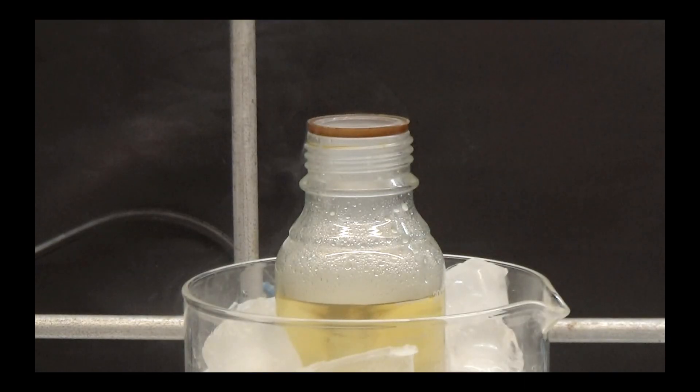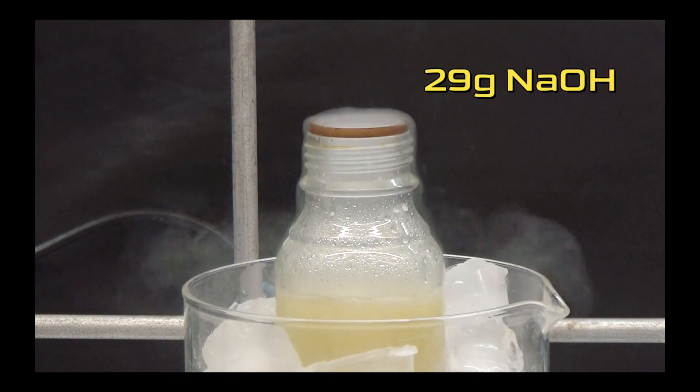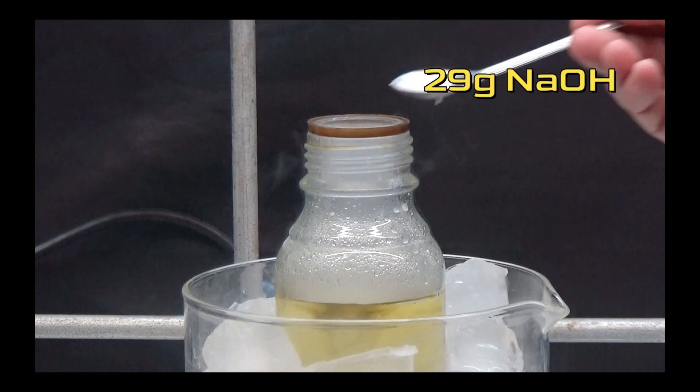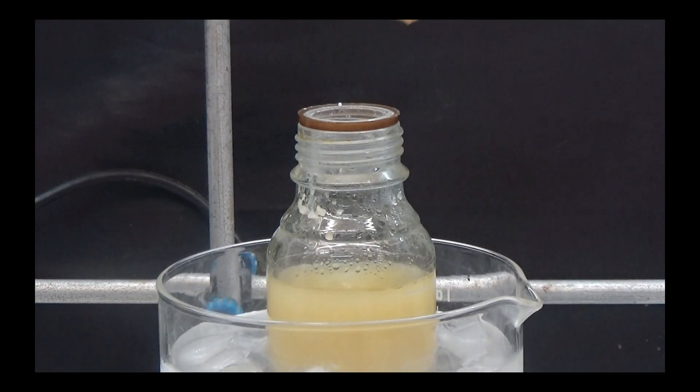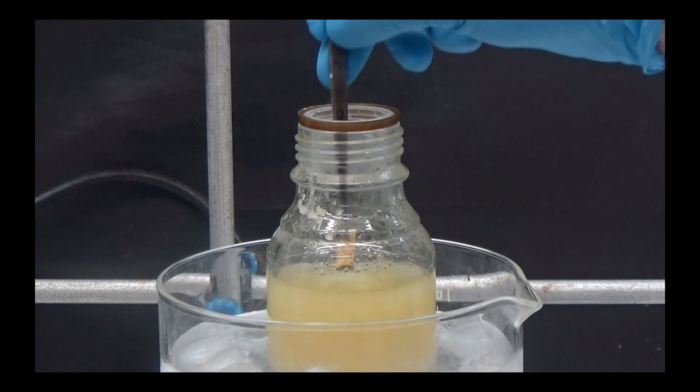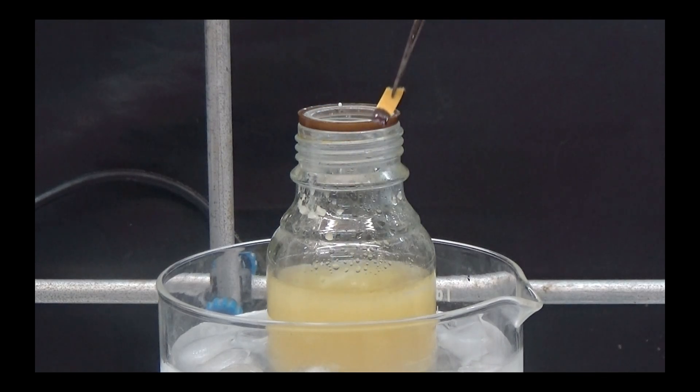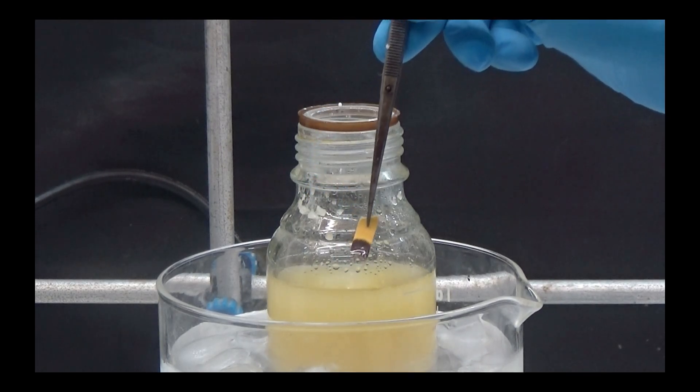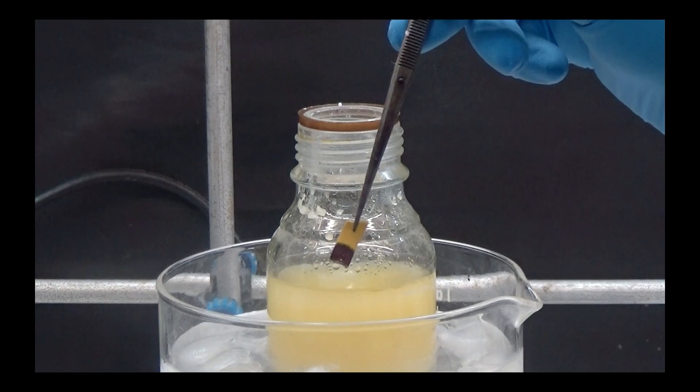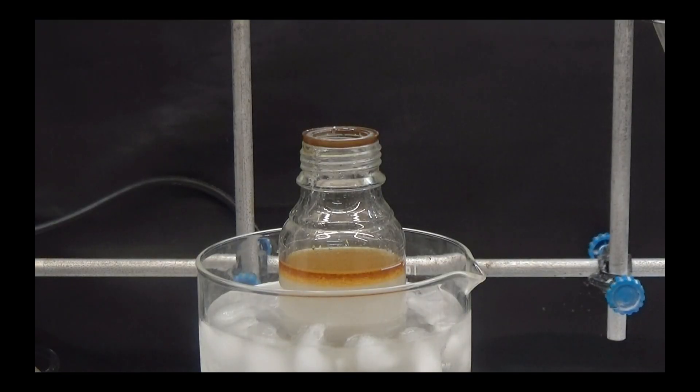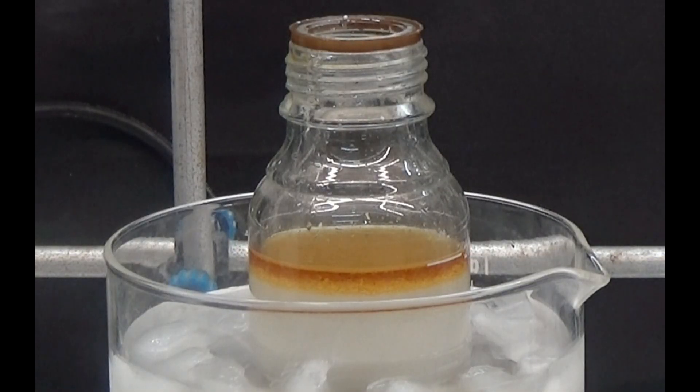Separate the aqueous phase and place it in a container immersed in an ice bath. Slowly add 29 grams of sodium hydroxide to separate the aniline. We must check the pH using indicator paper. It is necessary for the pH to be alkaline. At this point it is observed that the aniline has separated from the water in the form of oil.